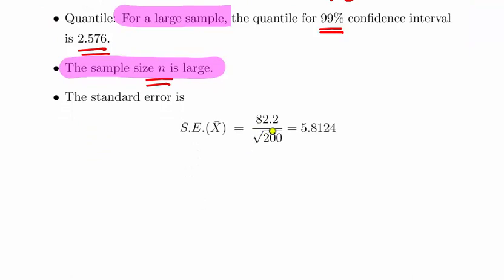Standard error is 82.2 divided by the square root of 200. And again, that is S over the square root of n, where S is the estimate for sigma. That gives us 82.2 divided by the square root of 200. Bit of calculator work. 5.8124.